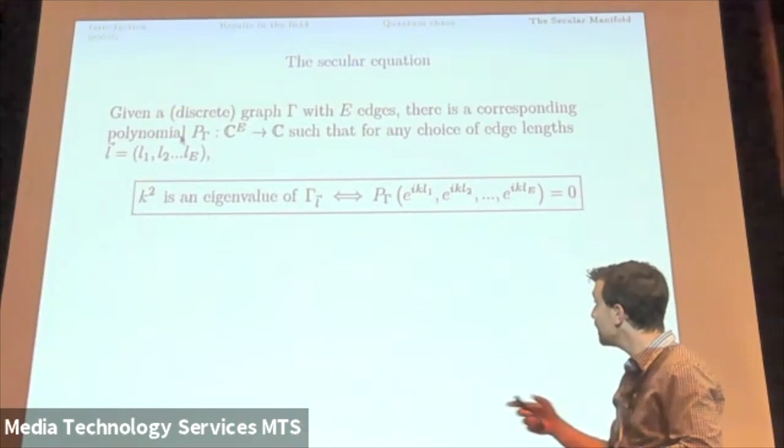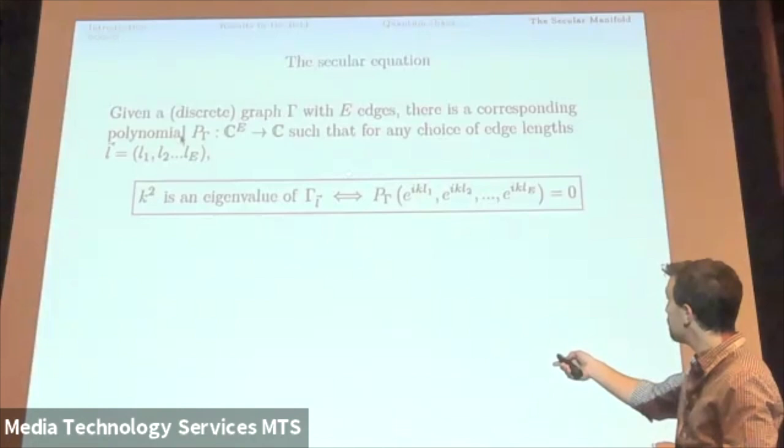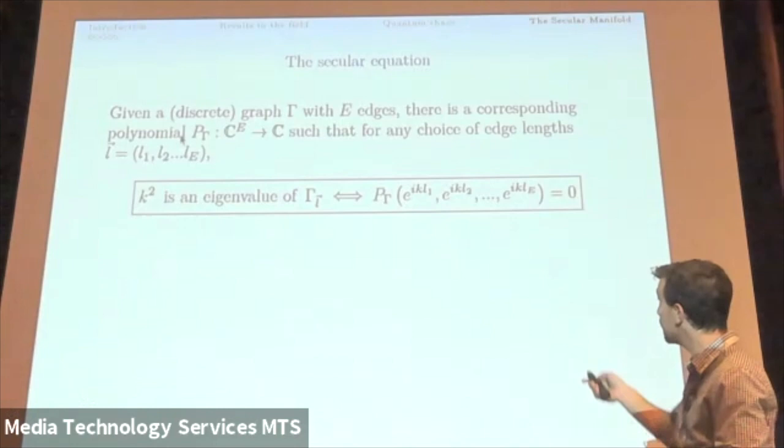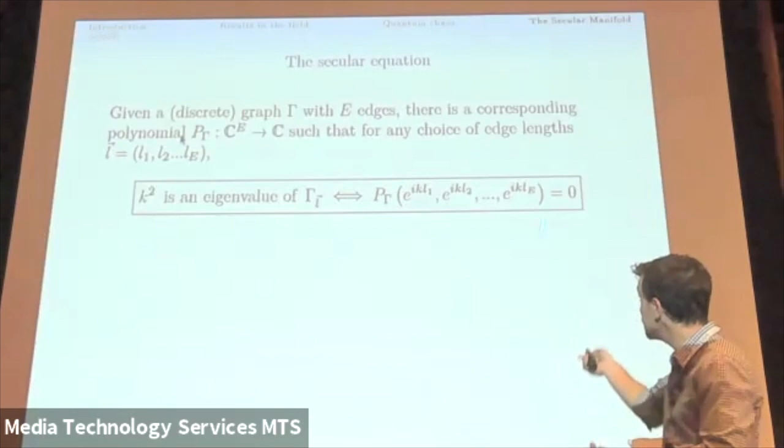I get the following equation. K squared is an eigenvalue if the right-hand side here is a function of K, the polynomial when I plug in e^{ikL_1} up to e^{ikL_E}. Again, the Ls are fixed. K is what's ranging. Whenever this function of K gets a zero, here I get the eigenvalue including multiplicity.